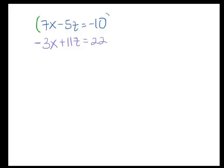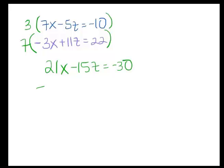But if I want to get rid of x, let's multiply the top equation by 3 and multiply the bottom one by 7. So when I do that, I'm going to get 21x minus 15z equals negative 30. Then I'm going to get negative 21x plus 77z equals 154.